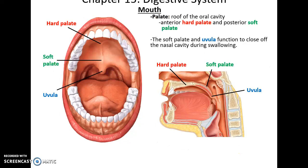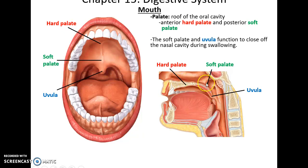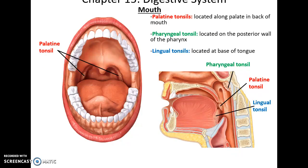The palate includes the hard palate — the roof of the mouth — which is made up partially of actual bone, while the soft palate is connective tissue and muscular tissue. Hanging off the very end of the back of the throat is the uvula. The uvula and soft palate are important because they help block the nasal cavity during swallowing so that food doesn't go up into the nasal cavity.